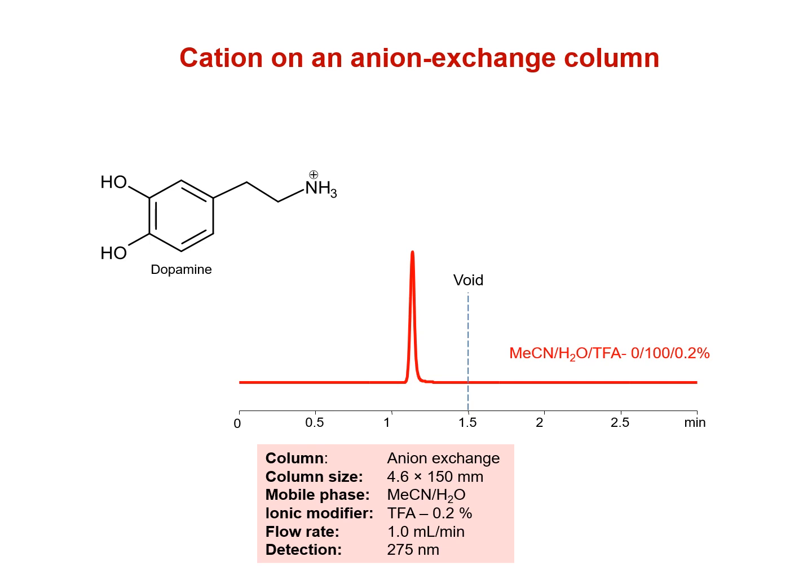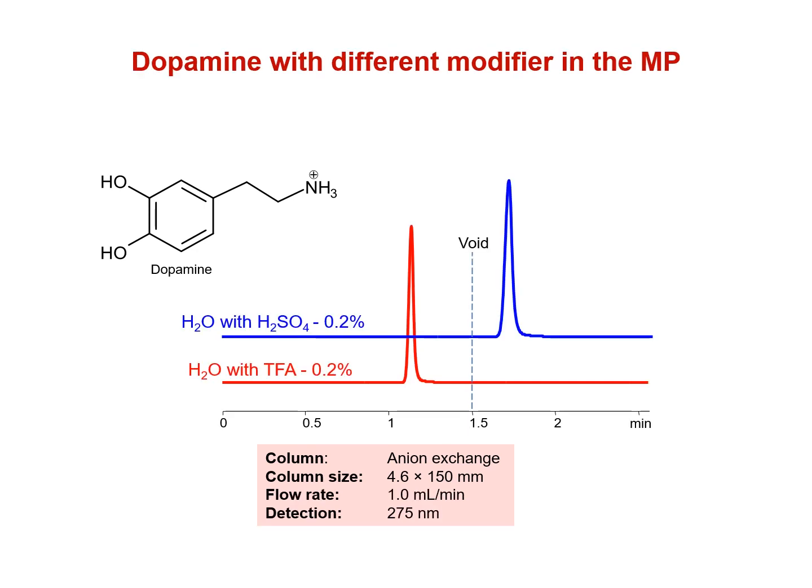For example, in a positively charged column with an aqueous mobile phase, protonated dopamine will elute pre-void due to the ion exclusion mechanism. However, when we replace trifluoroacetic acid with sulfuric acid, the protonated dopamine is slightly retained. We tried to explain this surprising observation using other known retention mechanisms, but none of them provide an adequate explanation for this phenomenon.